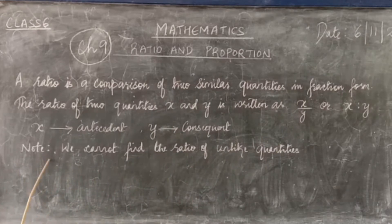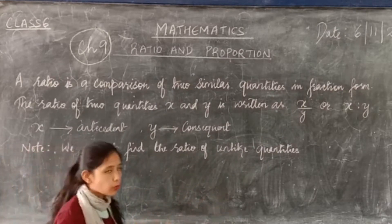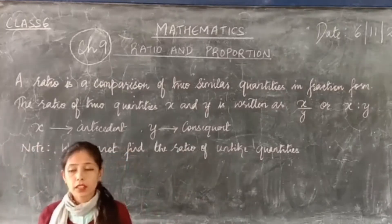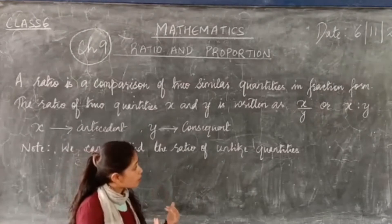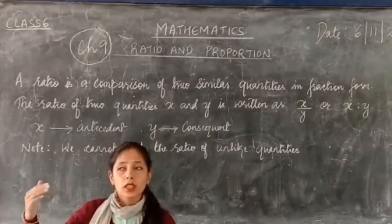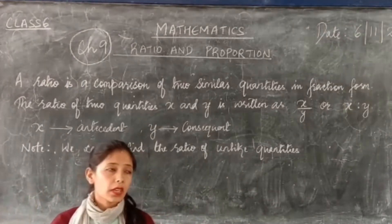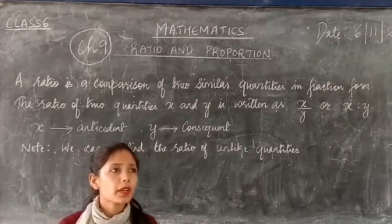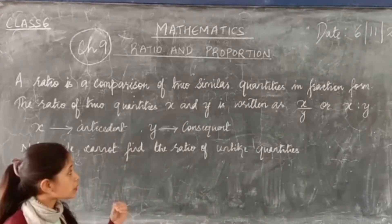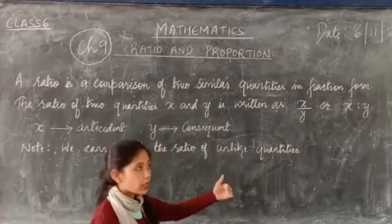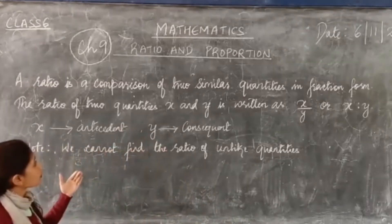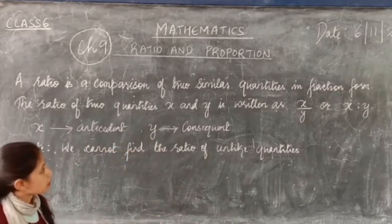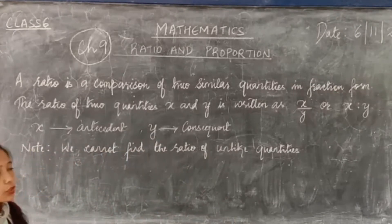Note this: we cannot find the ratio of two unlike quantities. That means we cannot compare your height with your weight. We cannot compare height and weight. You have to compare weight with weight only, and height with height only. So we have to compare only two similar quantities to write in ratio form.